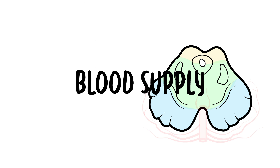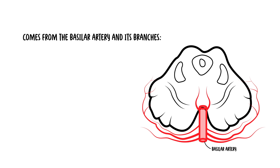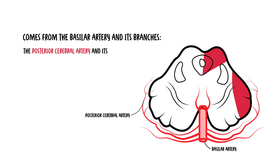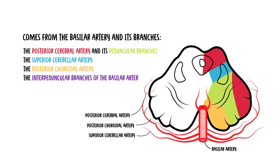Next is blood supply. The vascular supply of the midbrain comes from the basilar artery and its branches. The major vessels are the posterior cerebellar artery and its peduncular branches, the superior cerebellar artery, the posterior choroidal artery, and the interpeduncular branches of the basilar artery. So essentially, the majority of the blood supply is from the basilar artery and its branches.